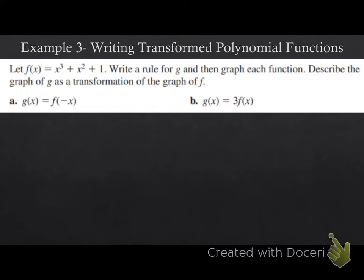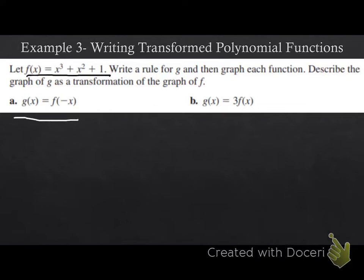Example three: writing transformed polynomial functions. It says, let f of x equal x cubed plus x squared plus 1. Write a rule for g, and then graph each function. Describe the graph of g as a transformation of the graph of f. So the first thing it wants me to do is to write a rule for g — pretty much just telling me to come up with this polynomial function of this transformation that's occurring. For letter a, I have g of x equals f of negative x.